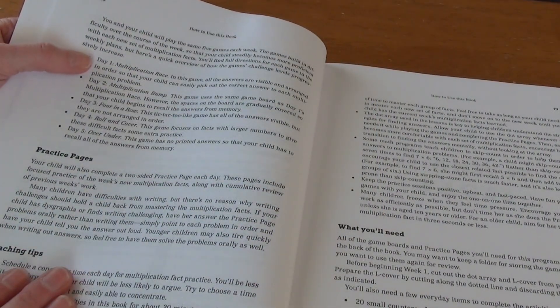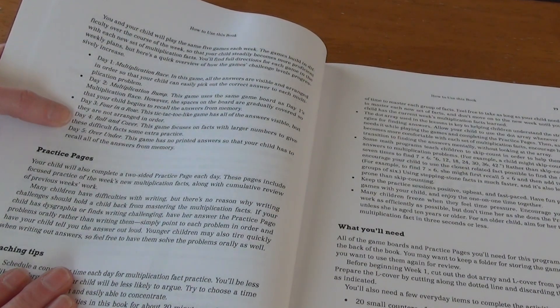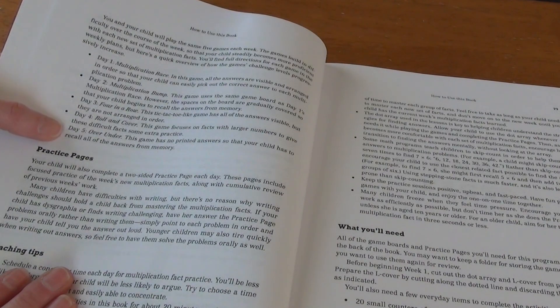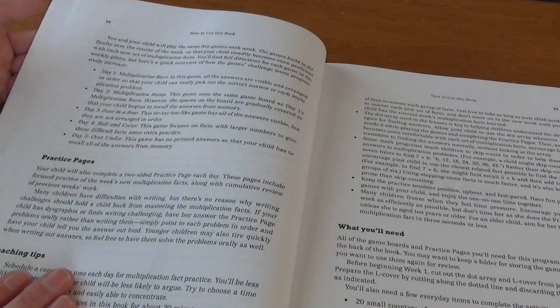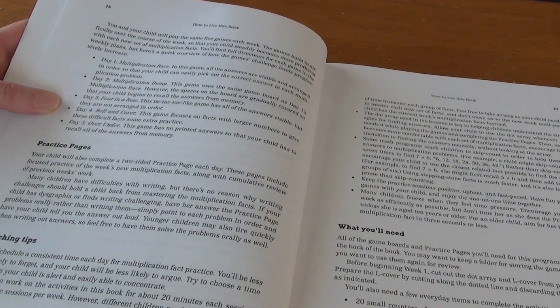And then here is a list of the games too. So day one is a multiplication race. Day two is multiplication bump. Day three, four in a row. Day four, roll and cover. Day five, over and under. So I believe these are kind of on repeat, but you're using the new fact to do that.